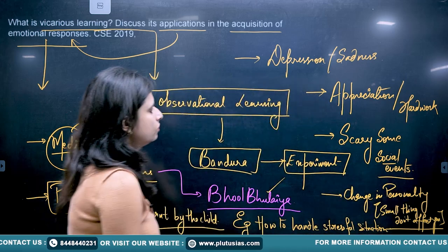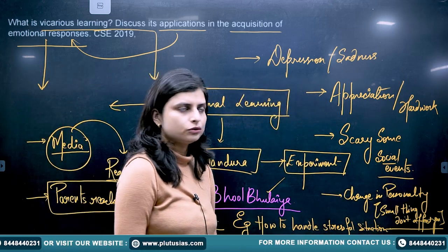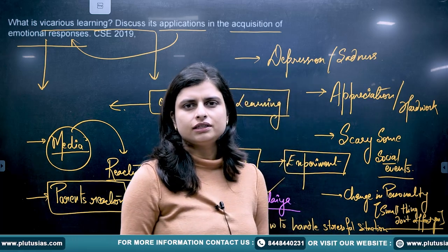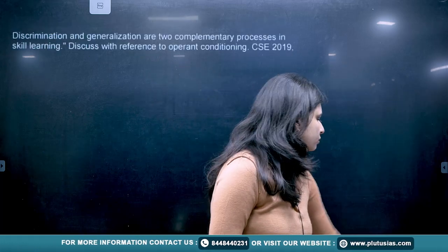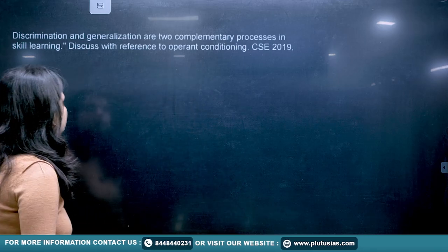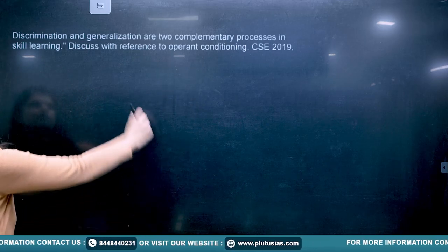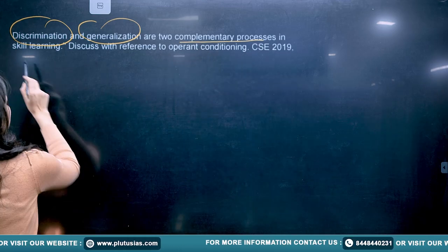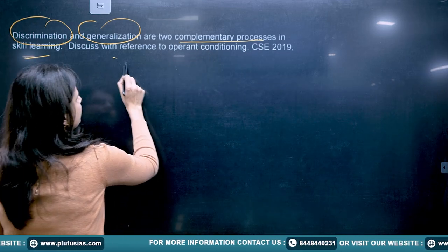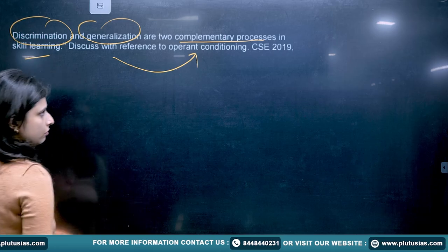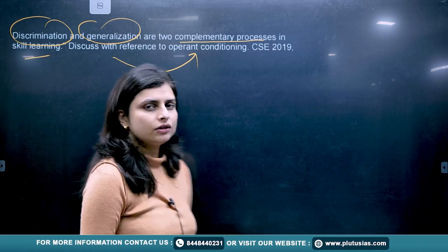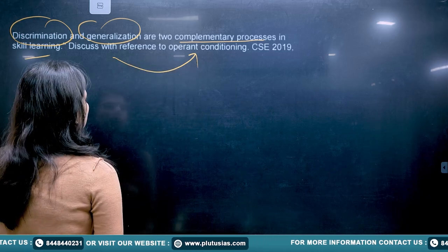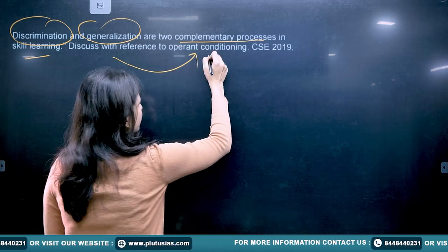This was an overview of vicarious learning. You can write many more factors, but those are the key points. Coming to the second question — discrimination and generalization are two complementary processes in skill learning; discuss with reference to operant conditioning. This is a very interesting question. First, you need to explain what operant conditioning is, and then explain what discrimination and generalization are.